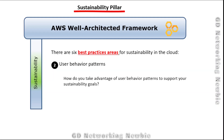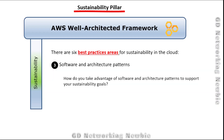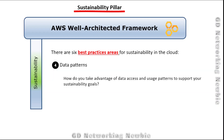The second area is user behavior patterns — how do you take advantage of user behavior patterns to support your sustainability goals? We can understand at what times users are using your services. During off-peak times when resources aren't being used, you can switch off some of your resources to save energy. Similarly, for data patterns, data that is not frequently accessed by users should be moved to cold storage.